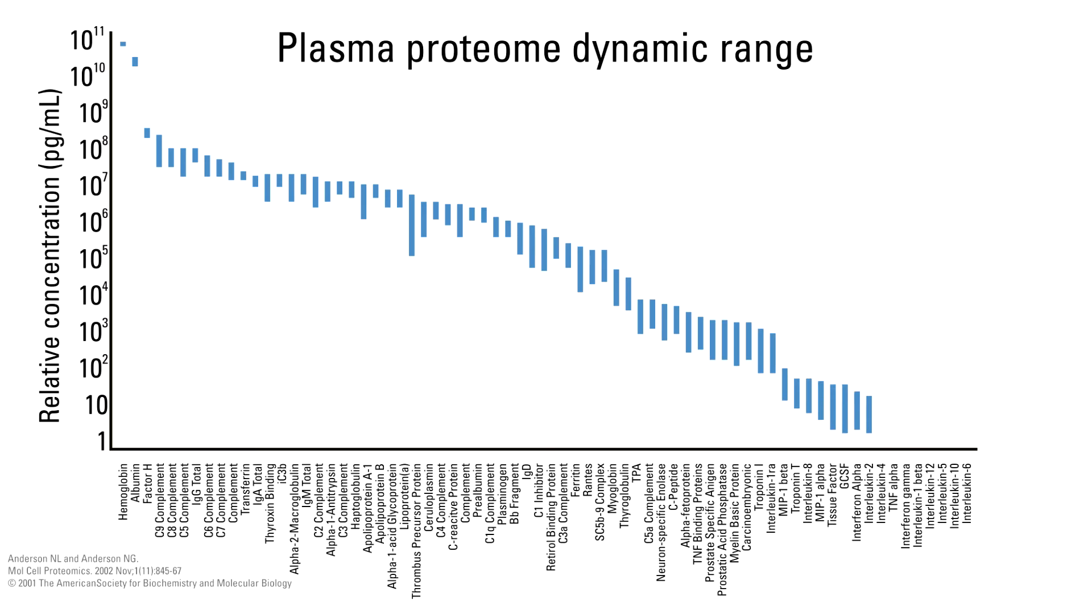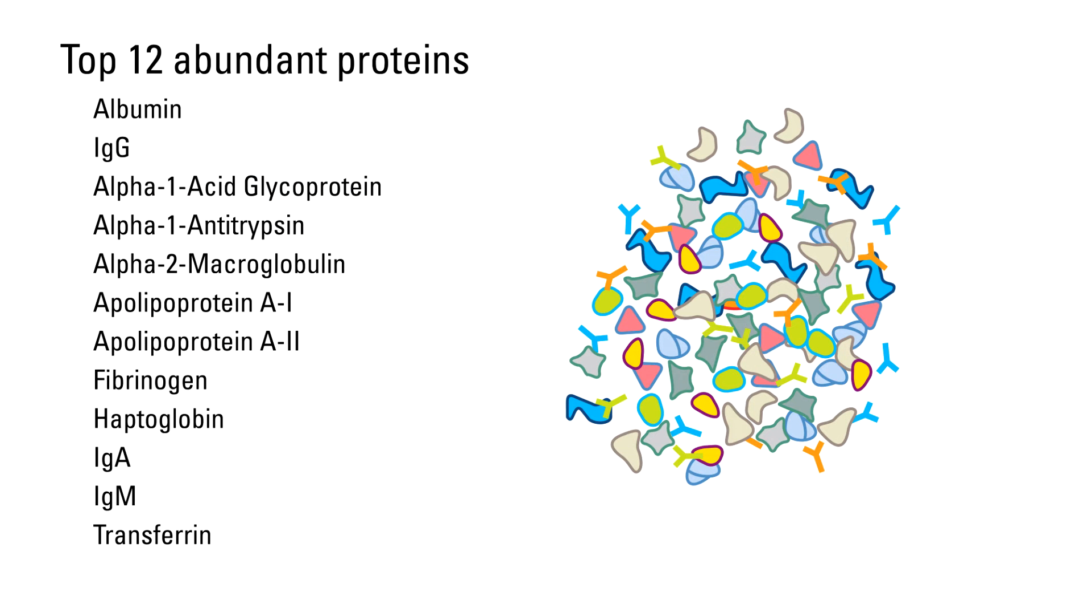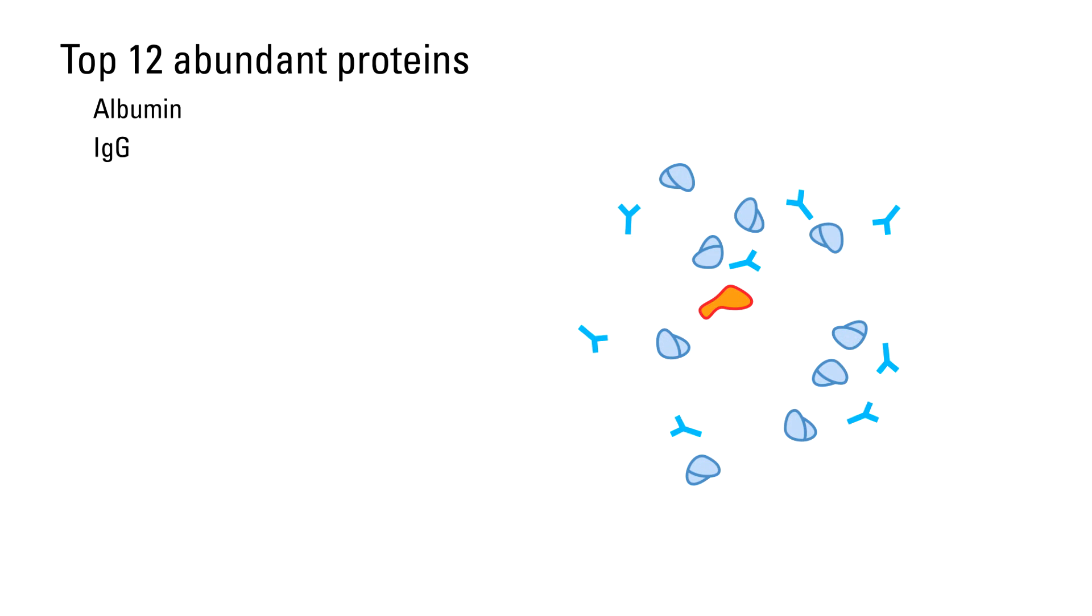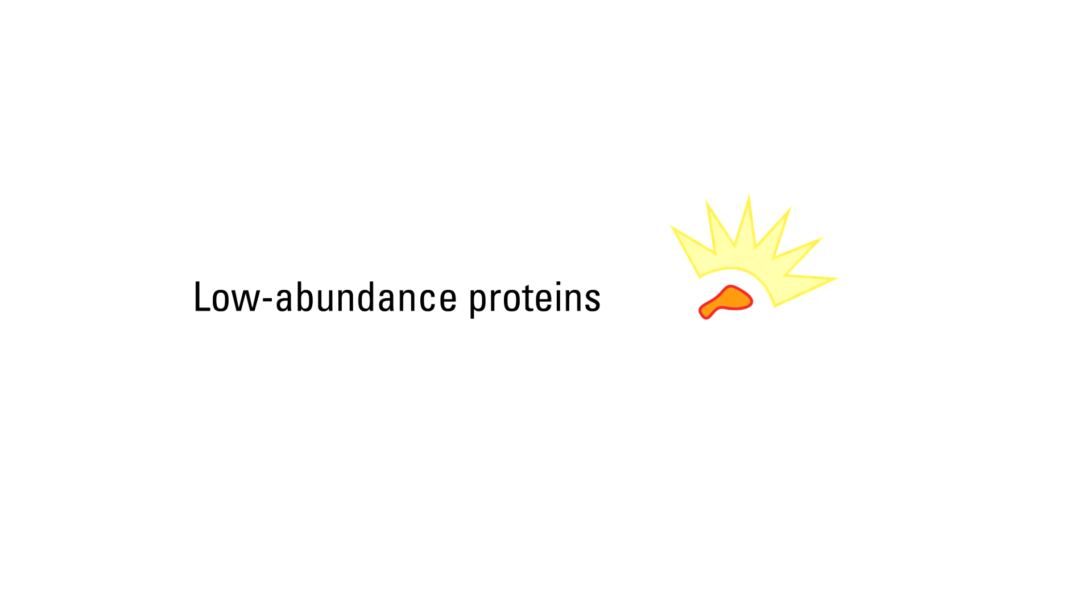The plasma proteome has an extremely wide dynamic range of protein concentrations. In fact, 95% of the proteome is comprised of just 12 proteins, which limits the ability to detect low-abundance proteins that have biological significance.